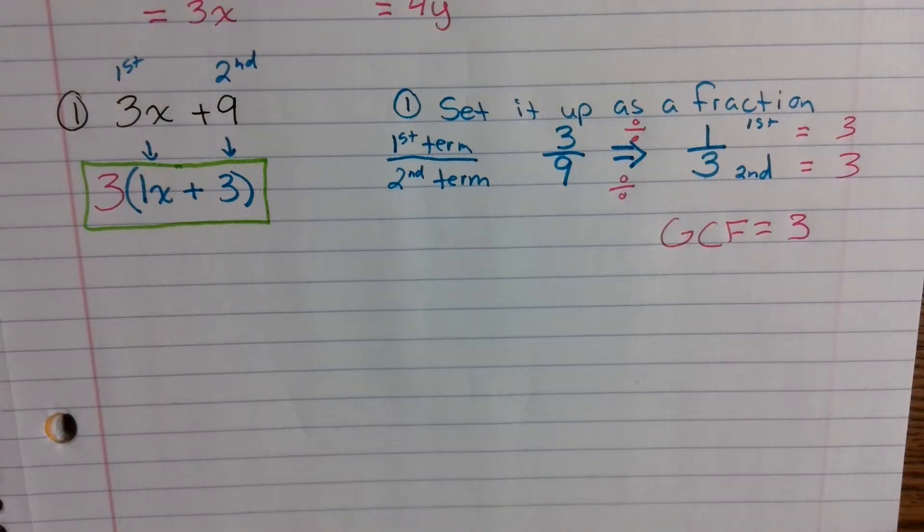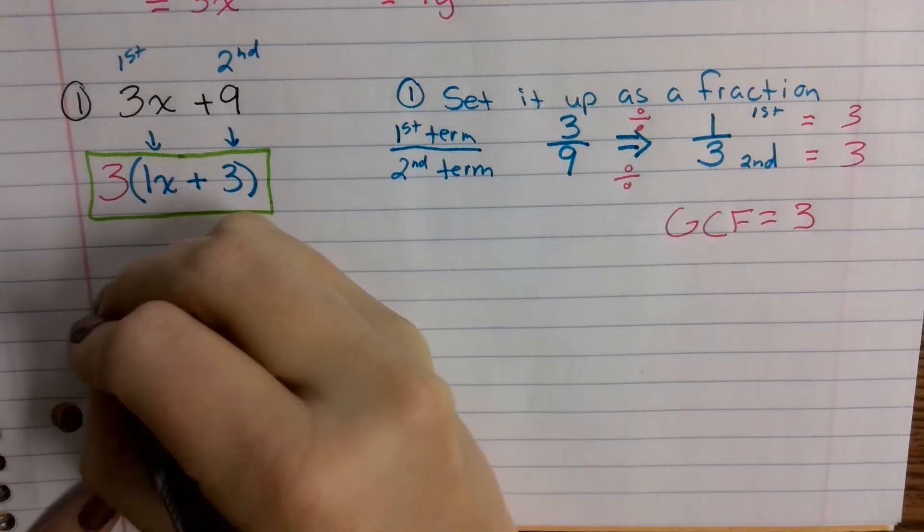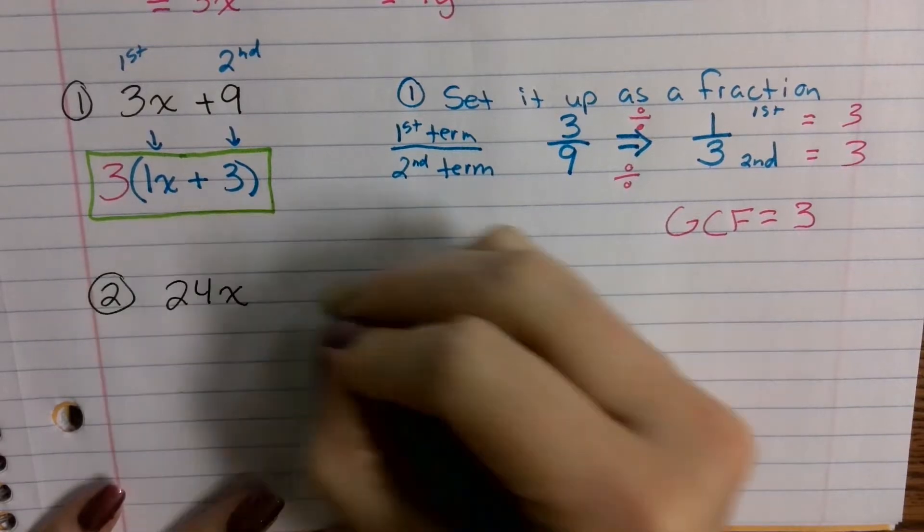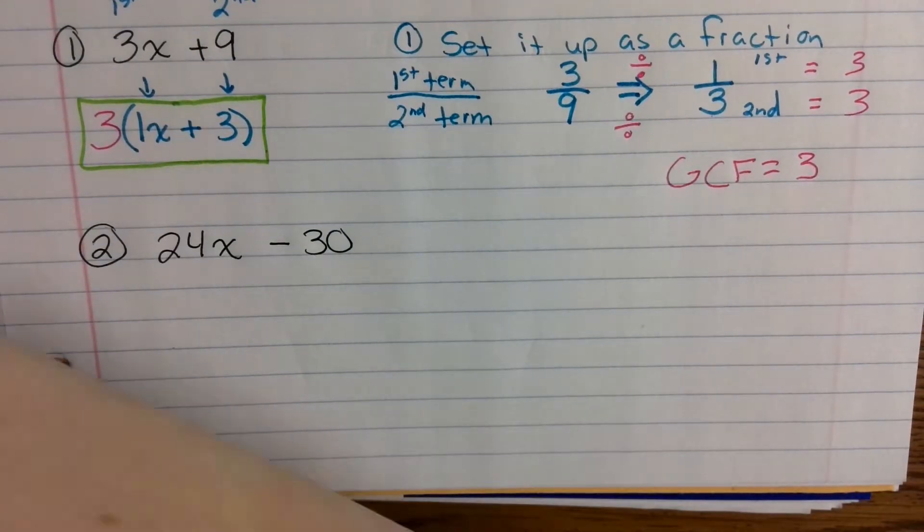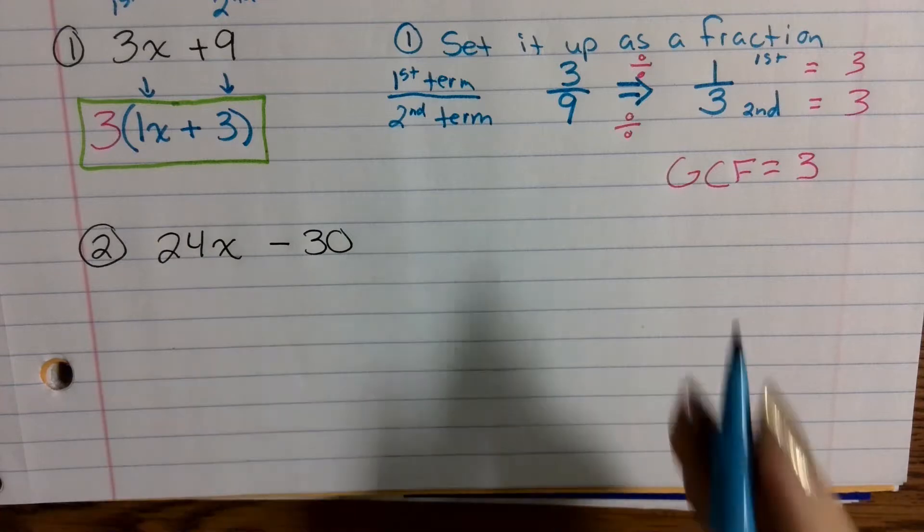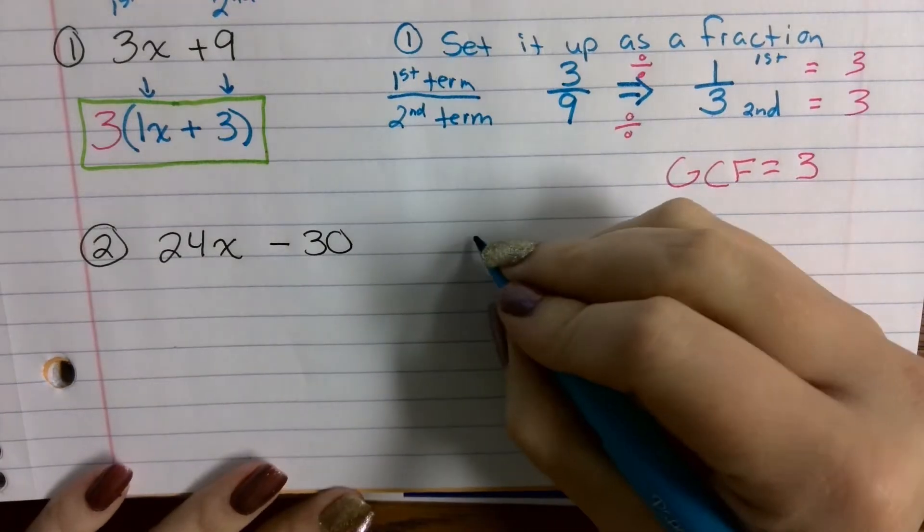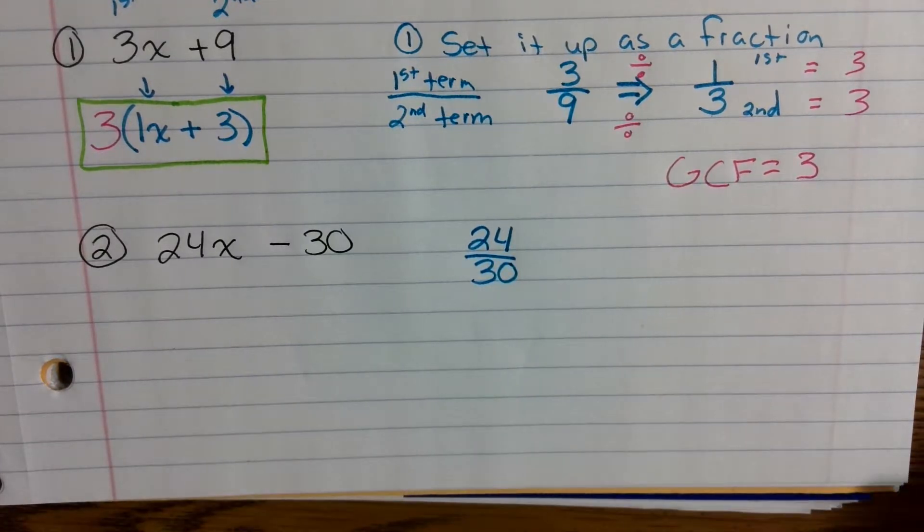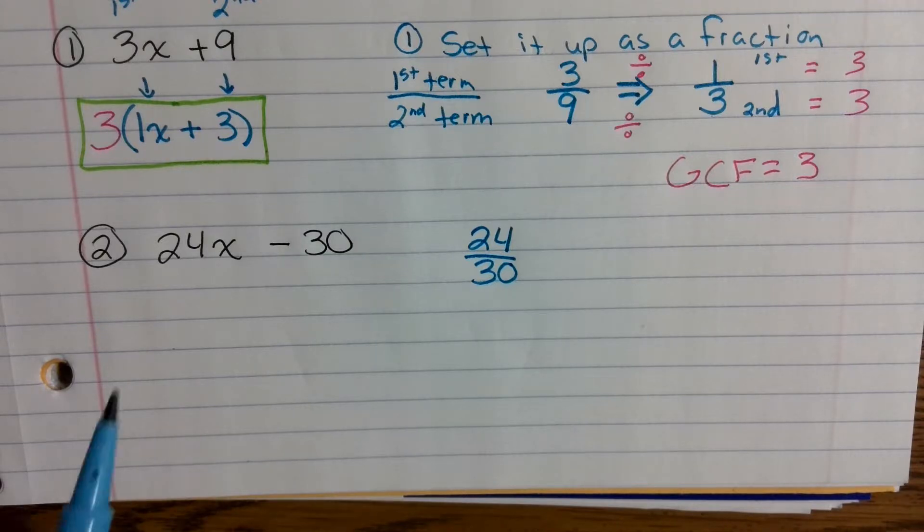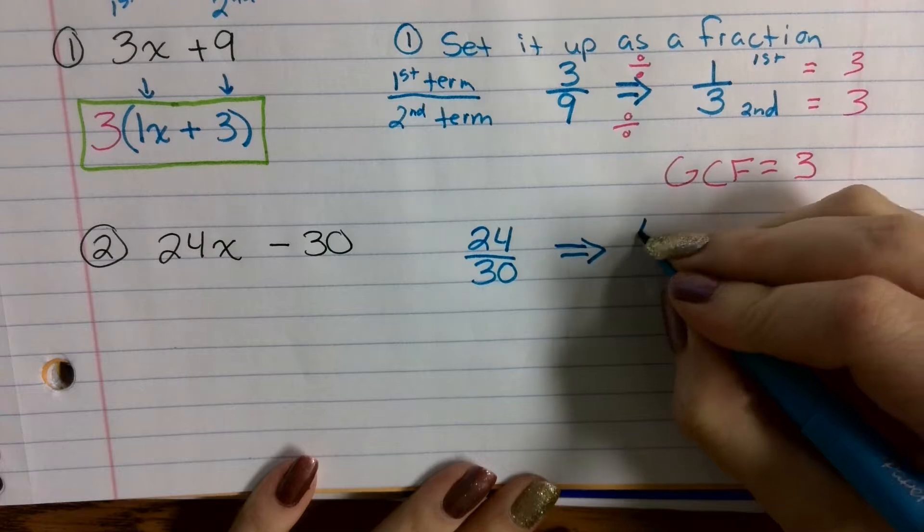So let me show you another one because some people still need a little bit more of a light bulb. So let's take 24x minus 30. 24x minus 30. So again, the first thing I want to do is I want to set it up as a fraction. So who can raise their hand? Tell me what's the fraction going to look like. Kingston. 24 over 30. Good. So I'm going to set this up as 24 over 30. Everybody type 24 over 30 into your calculator and hit enter. And what do you get when you enter it? JD? 4 over 5. Very good.